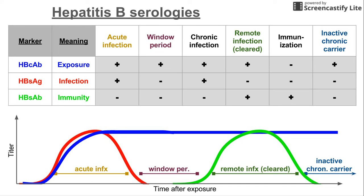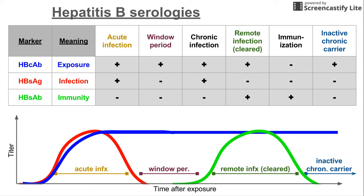For acute infection, a person who has been acutely infected has been exposed to the virus — that's how they got it — so the core antibody is positive. They are infected, so the surface antigen is also positive. But they're not immune yet; the body has not started producing surface antibody during this early acute infection phase, so the surface antibody is negative.